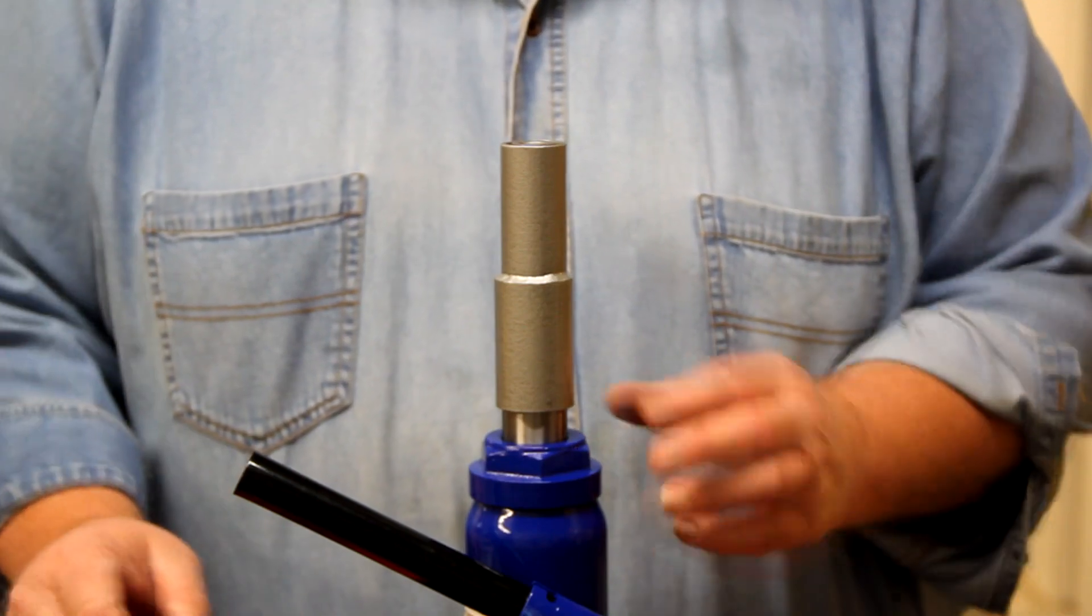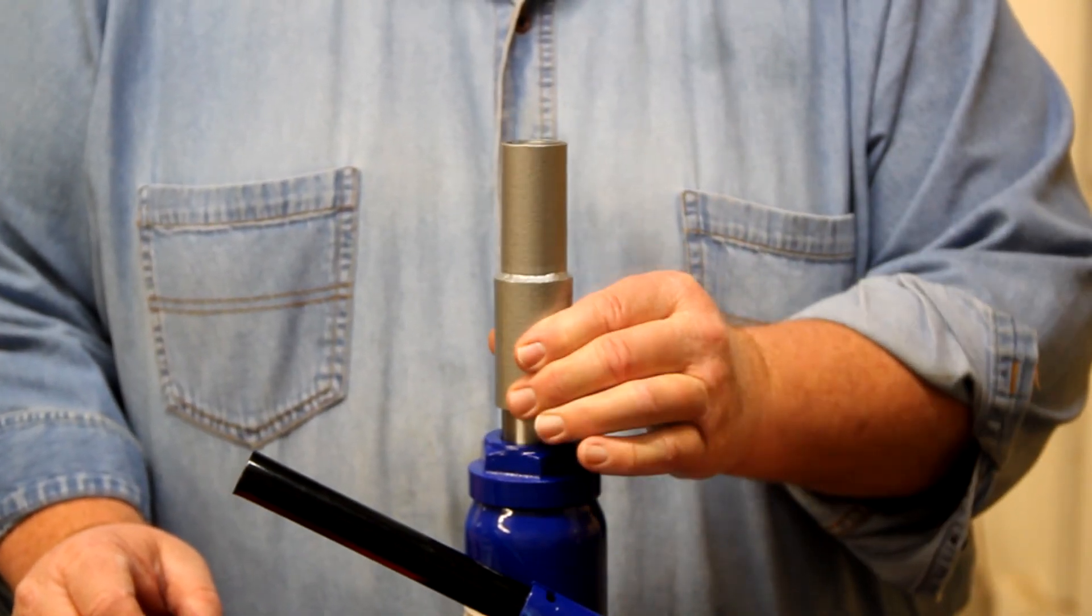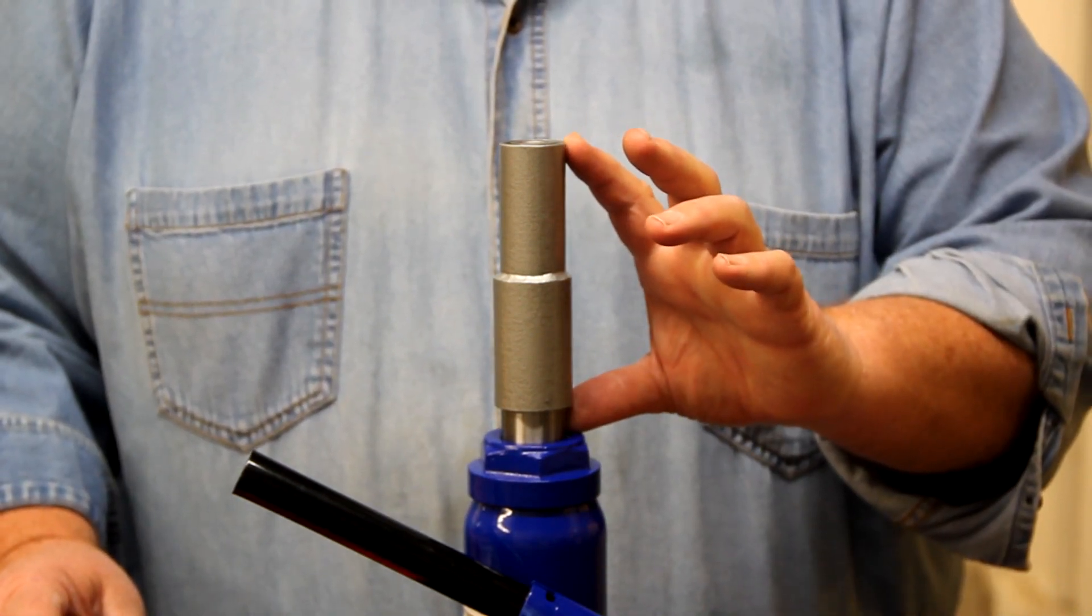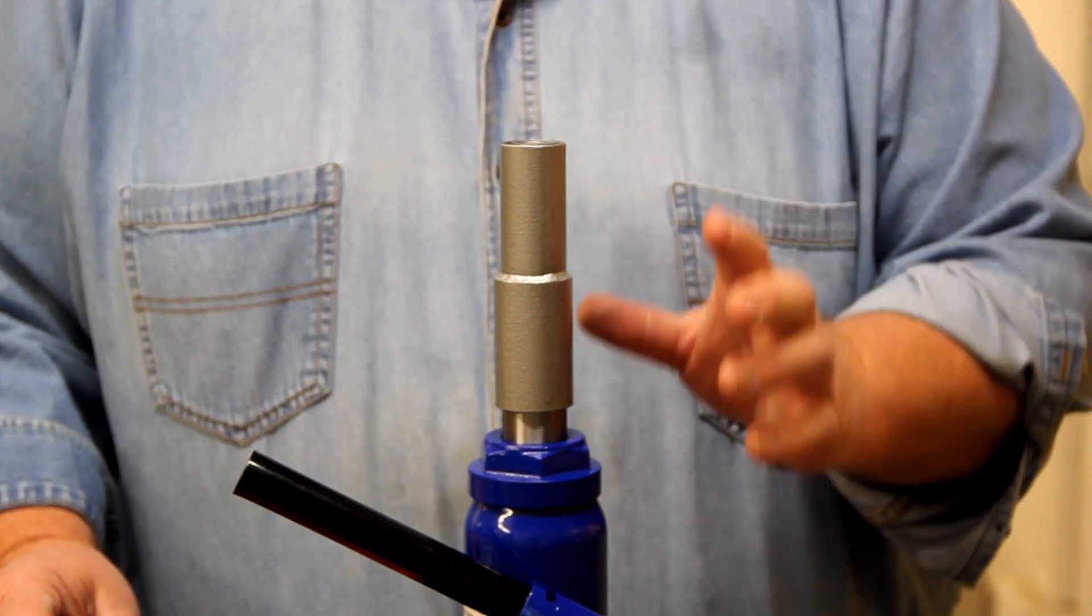But, why don't we just extend the ram of the jack to the level of work. Now, this is a three inch extension. That's equivalent to two 2x4s. It's locked to the jack, so it's totally stable. It's not going to kick out and fall over.